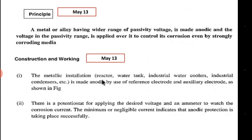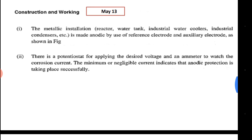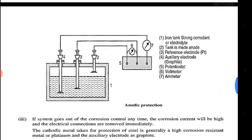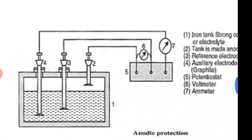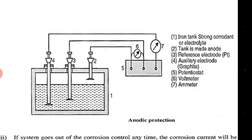Metallic installations like reactors, water tanks, industrial water coolers, and industrial condensers are made anodic by using a reference electrode and an auxiliary electrode. As shown in the diagram for anodic protection: this is an iron tank which contains a very strong corrodant, and there are three electrodes involved.